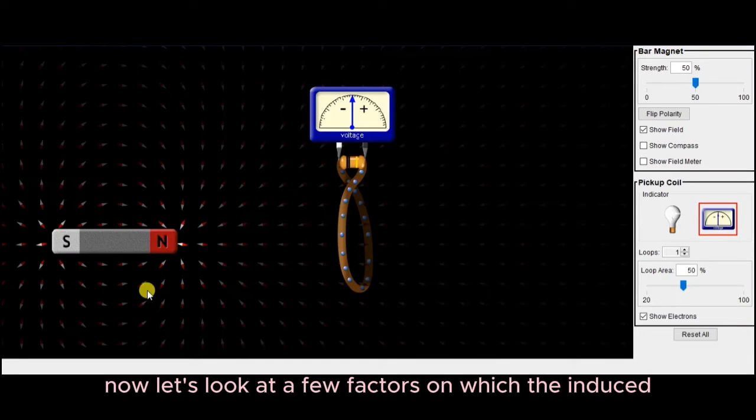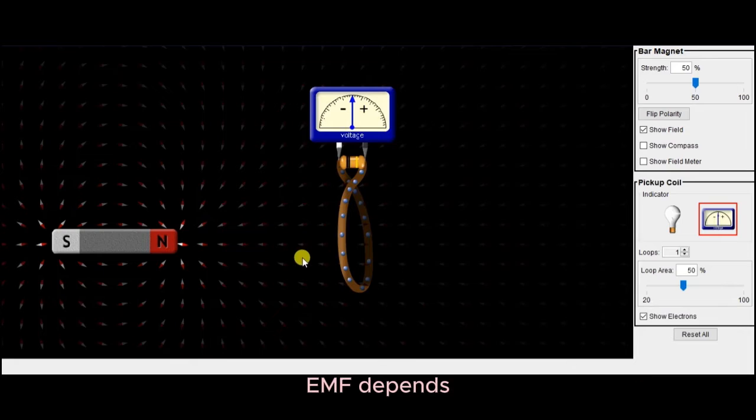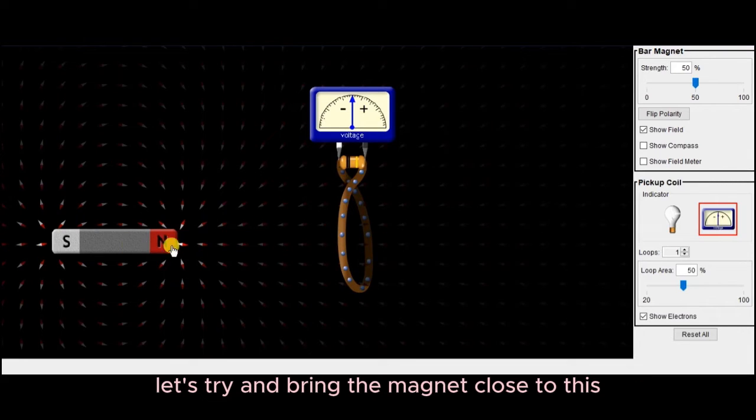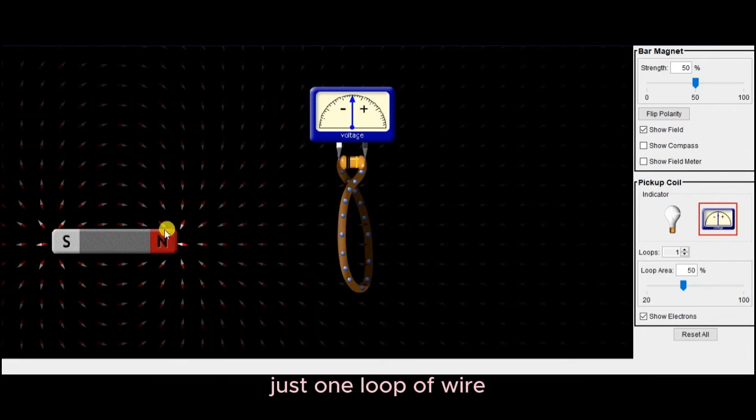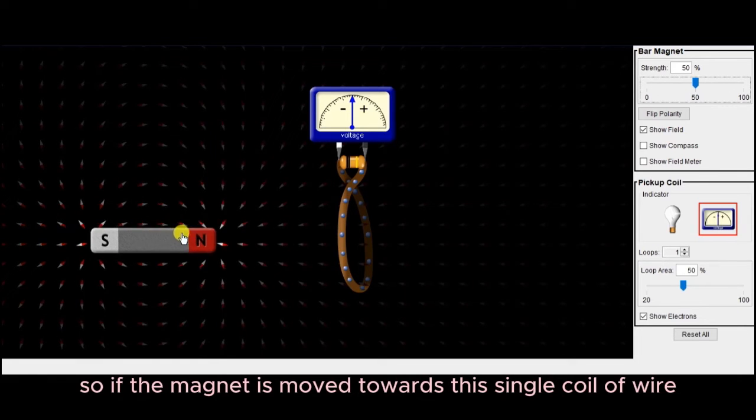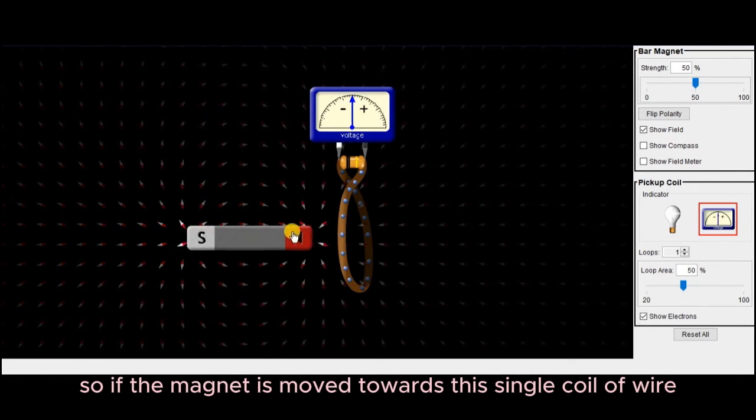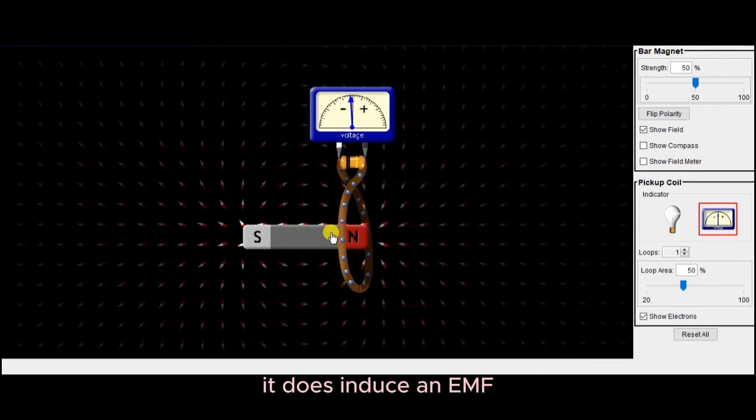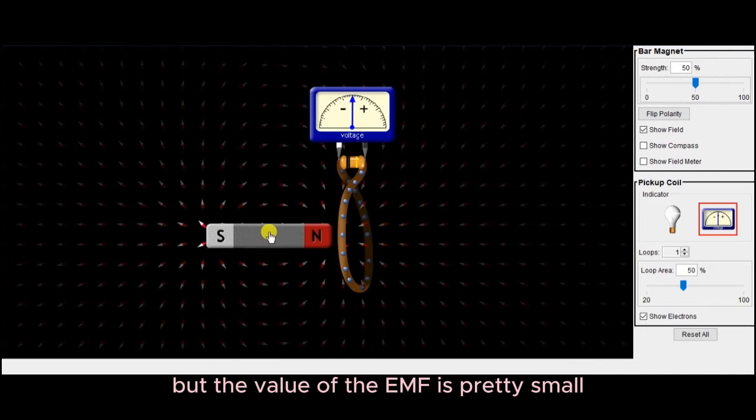Now let's look at a few factors on which the induced EMF depends. First of all, let's try and bring the magnet close to this just one loop of wire, and just have a look at the EMF induced. So if the magnet is moved towards this single coil of wire, it does induce an EMF, but the value of the EMF is pretty small.